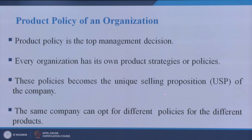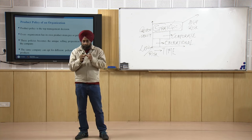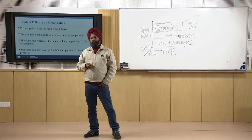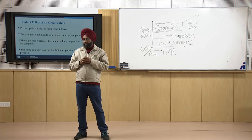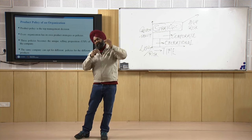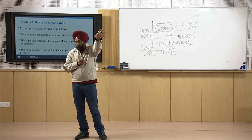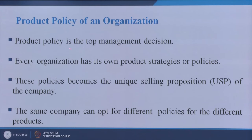If the policy of a company is that the product will be very durable, reliable, high quality, and maintenance-free, that becomes their USP and gives them a market advantage. The same company can opt for different policies for different products. For example, an automobile company in India may sell both the costliest and cheapest car in India, with different policies for each product.